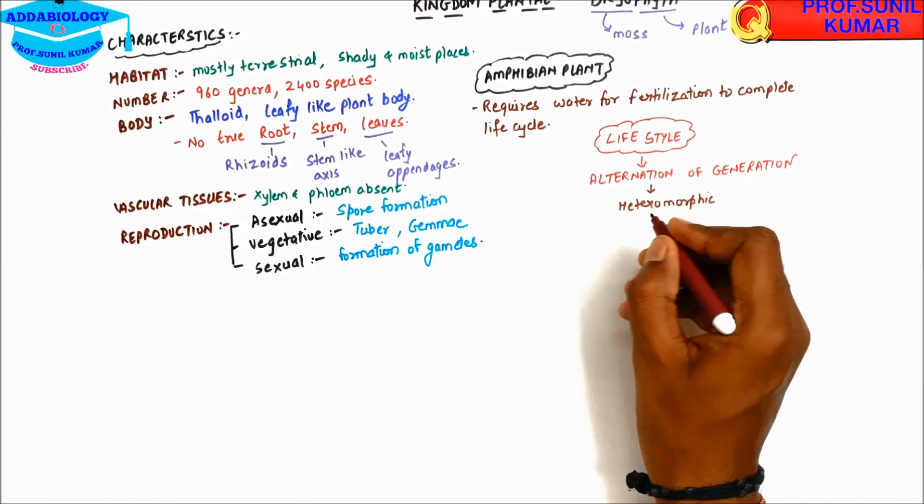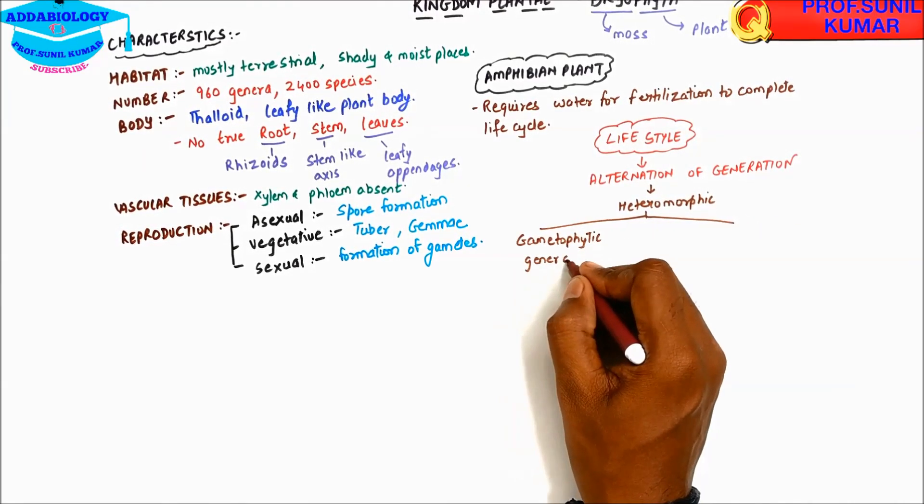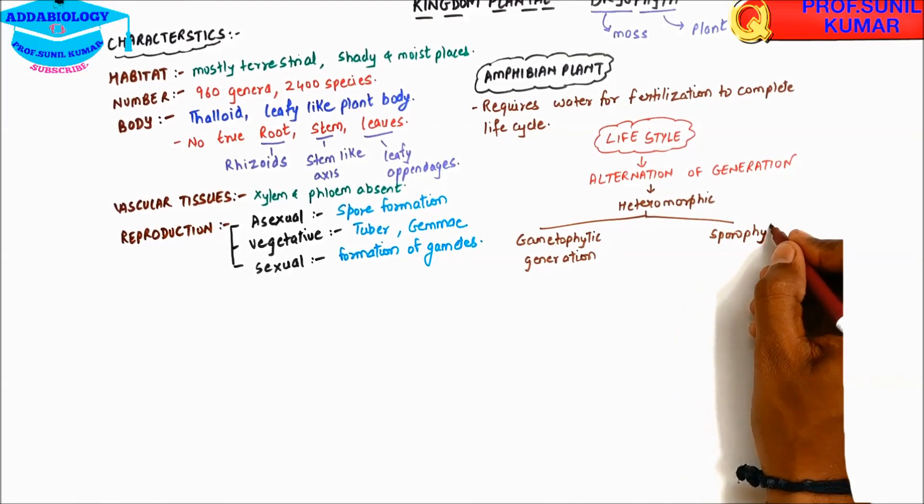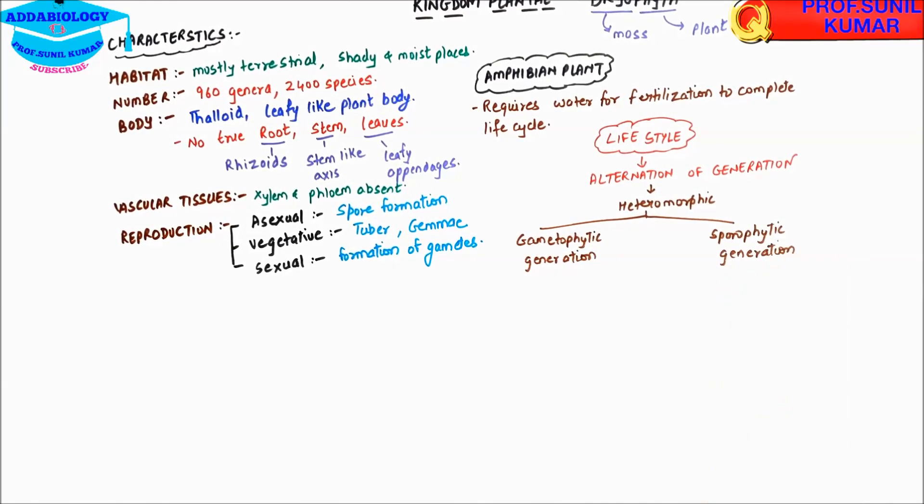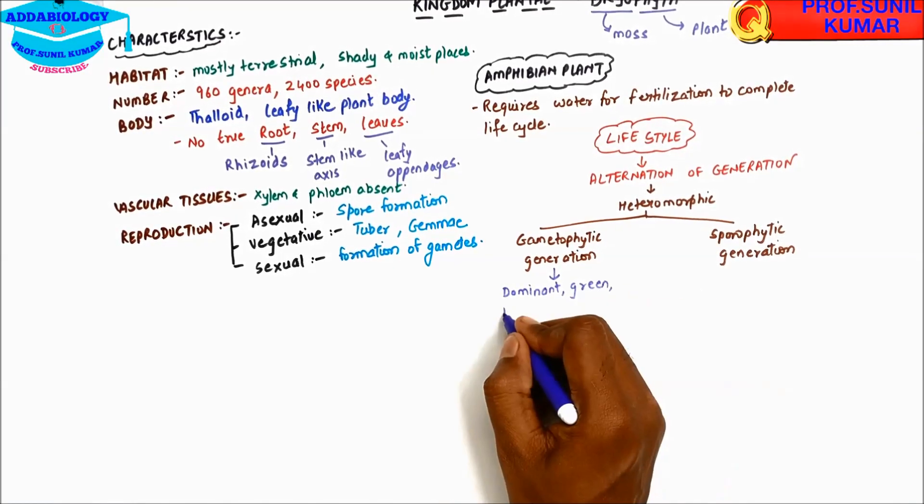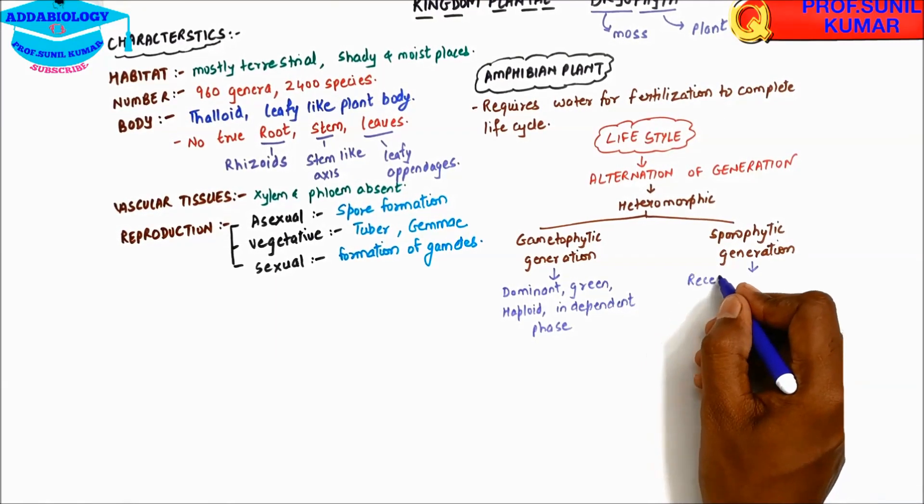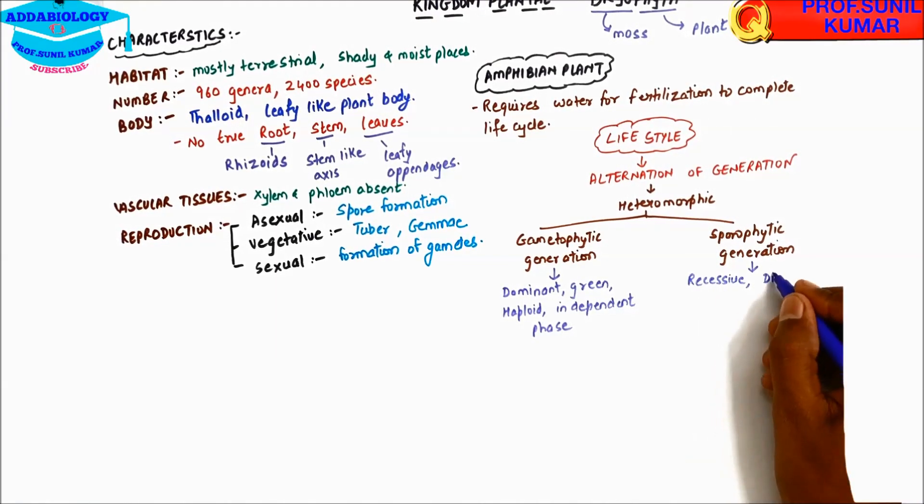It means in bryophyta there are two phases: gametophytic phase and sporophytic phase. In gametophytic generation, it is dominant, green, haploid, and independent phase. When we talk about sporophytic, they are recessive, diploid, partially dependent on gametophytic phase.